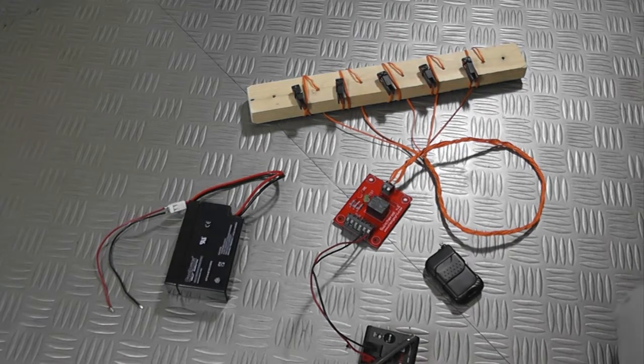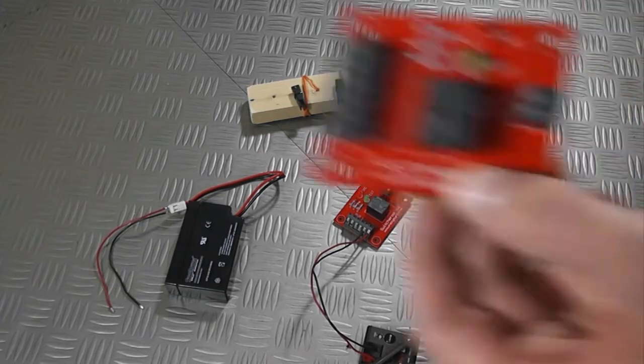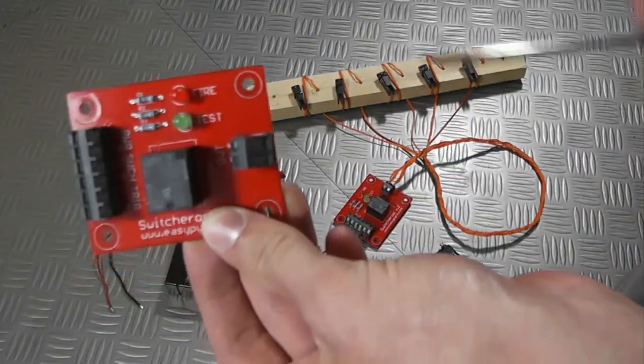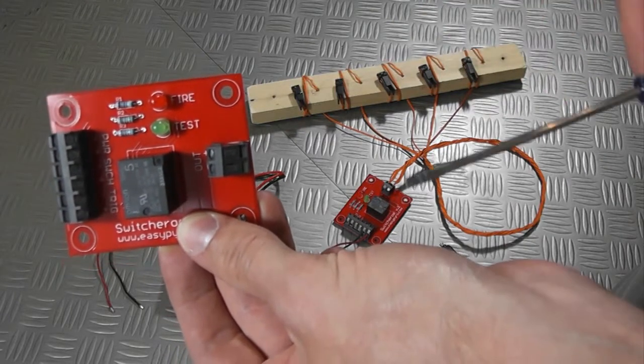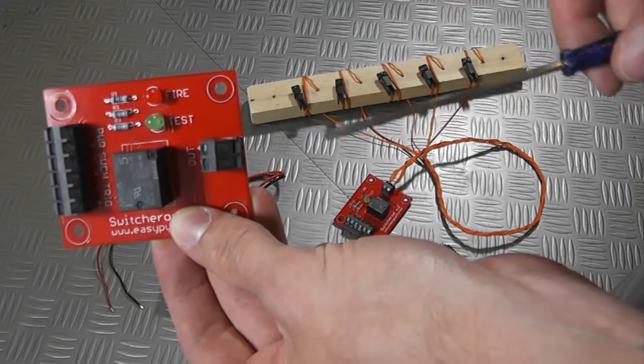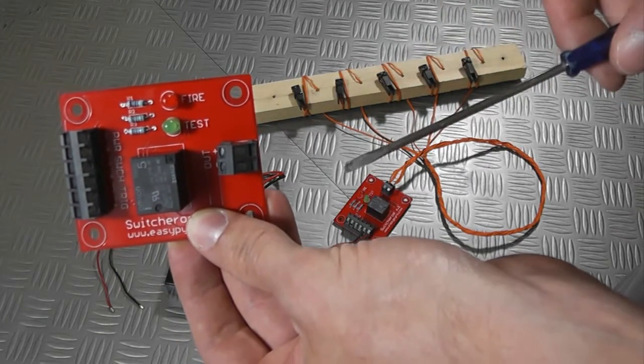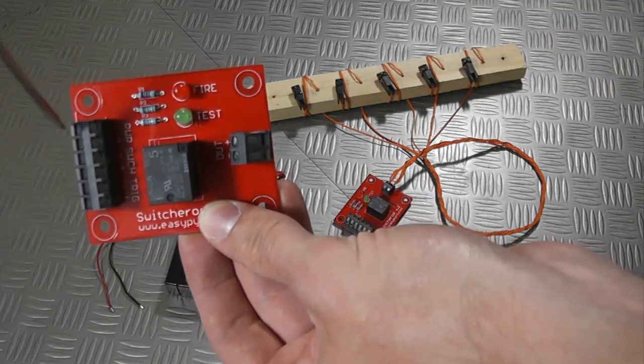So the switcheroo's got a couple of interesting little features in it. Let me give you a close up here again. We've just got screw terminals for our trigger out port. But you'll see we've also got a fire LED to let you know when the relay is closed. We've got a test LED which will let you know if you've got continuity on your output port. Our power just goes in here.